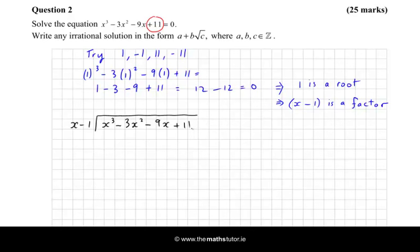So x into x cubed goes x squared times. Now multiply x squared by x minus 1 and we get x cubed minus x squared. Now we're subtracting that from the line above so another way of doing that is change the signs and add. So the x cubed cancel. And then minus 3x squared plus x squared is minus 2x squared. Now divide x into that and we get minus 2x. Multiply minus 2x by x minus 1 and we get minus 2x squared plus 2x.